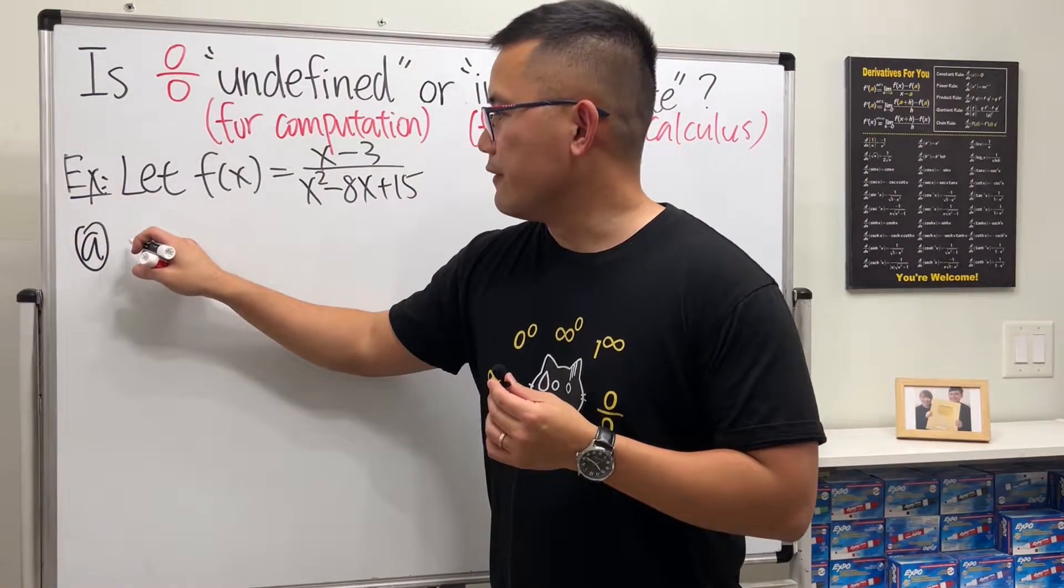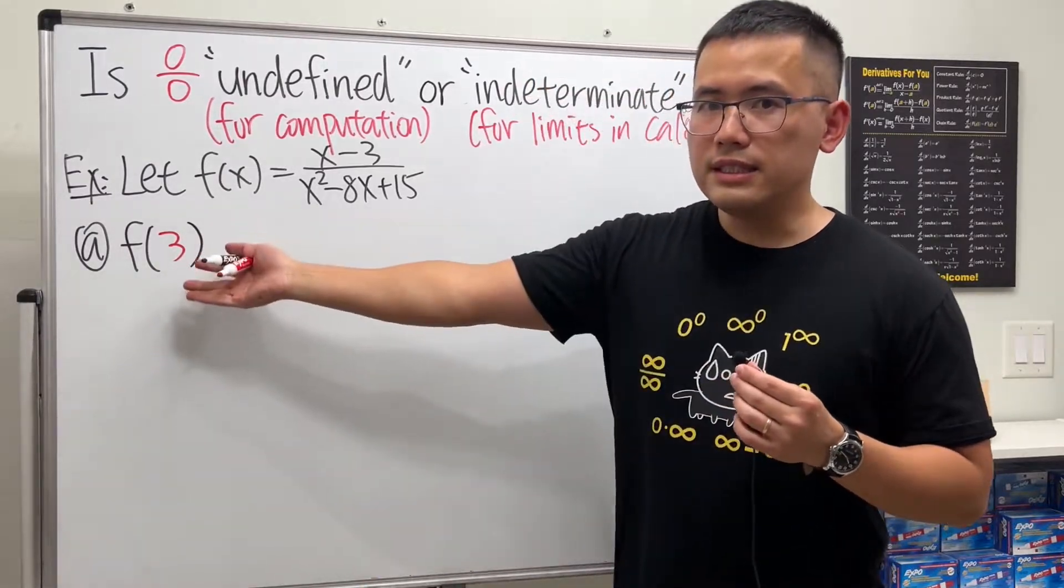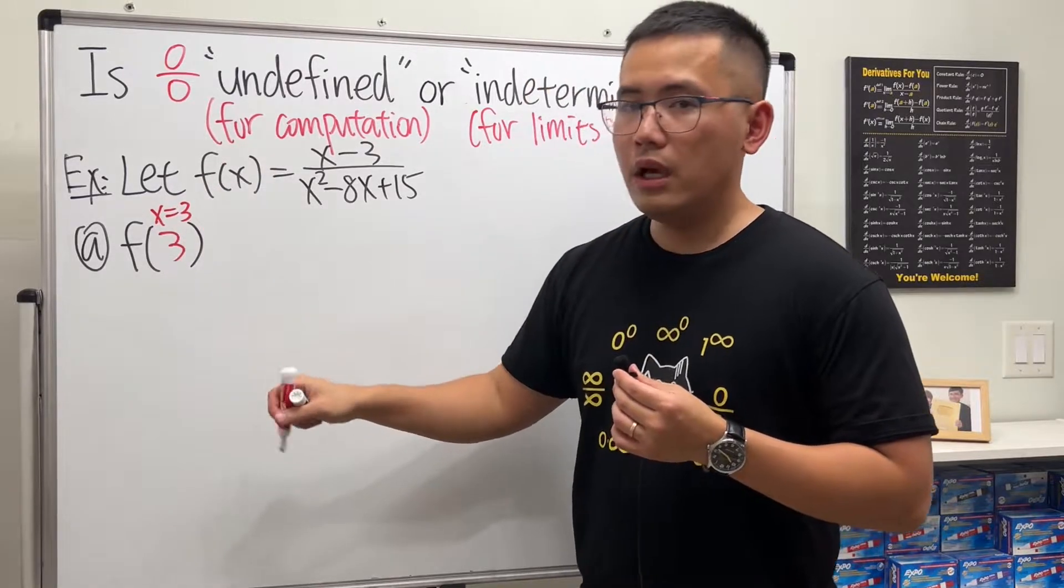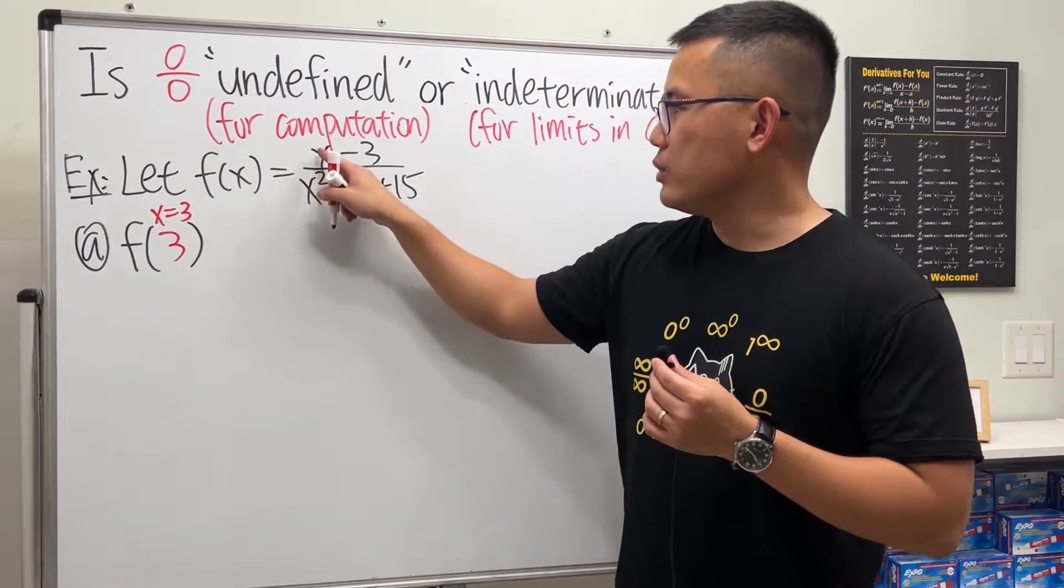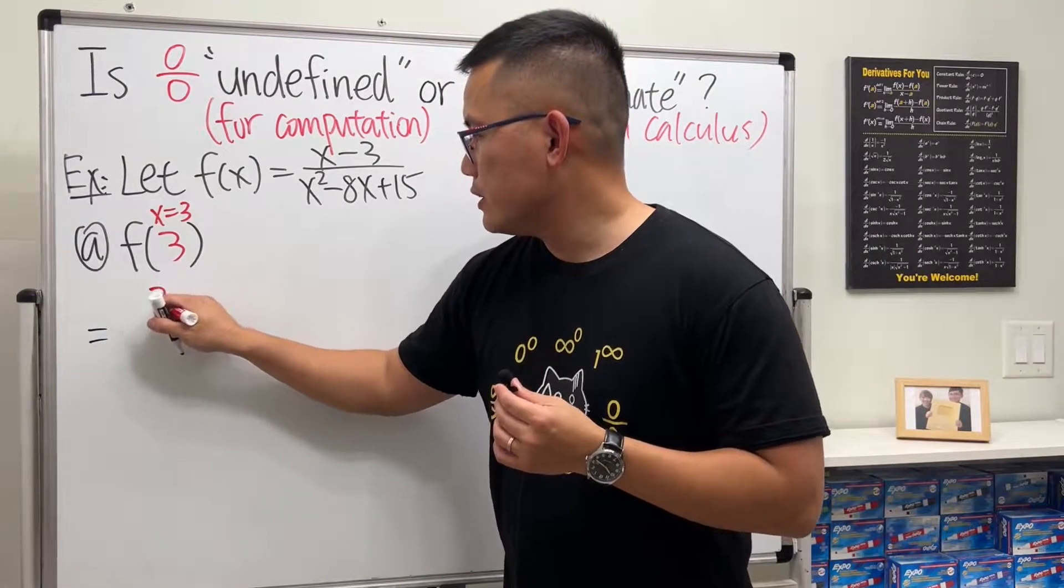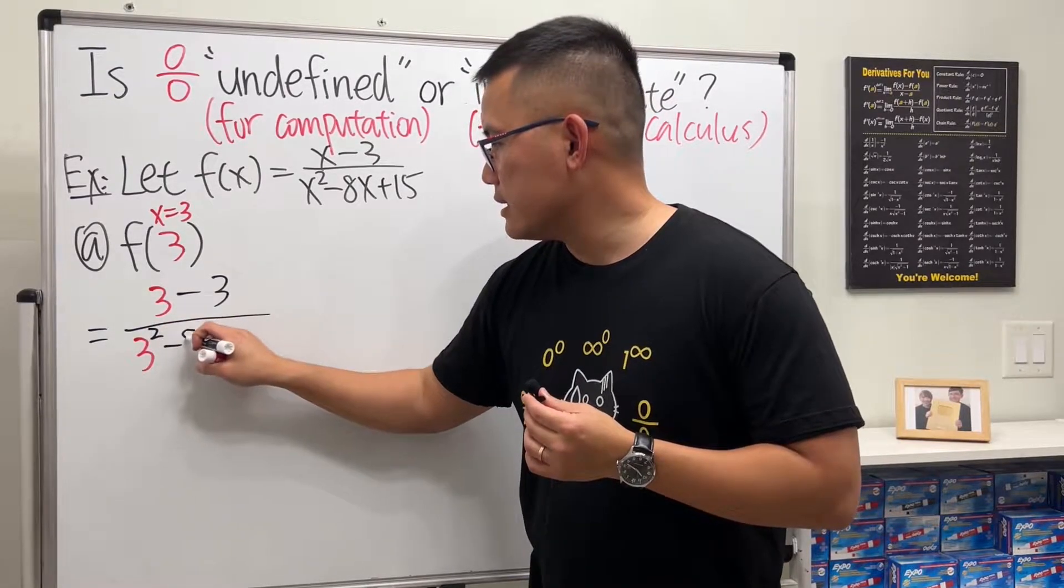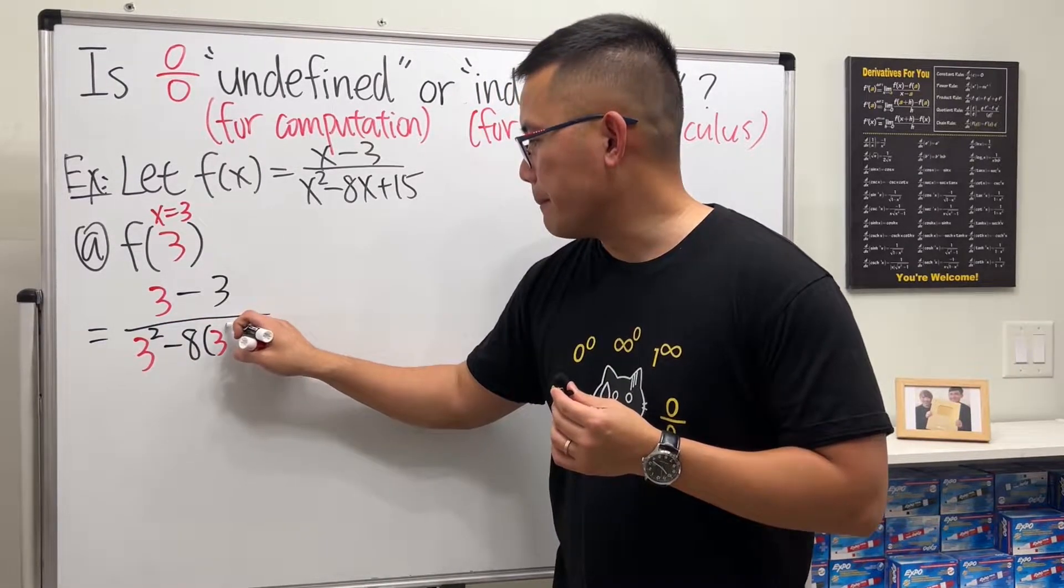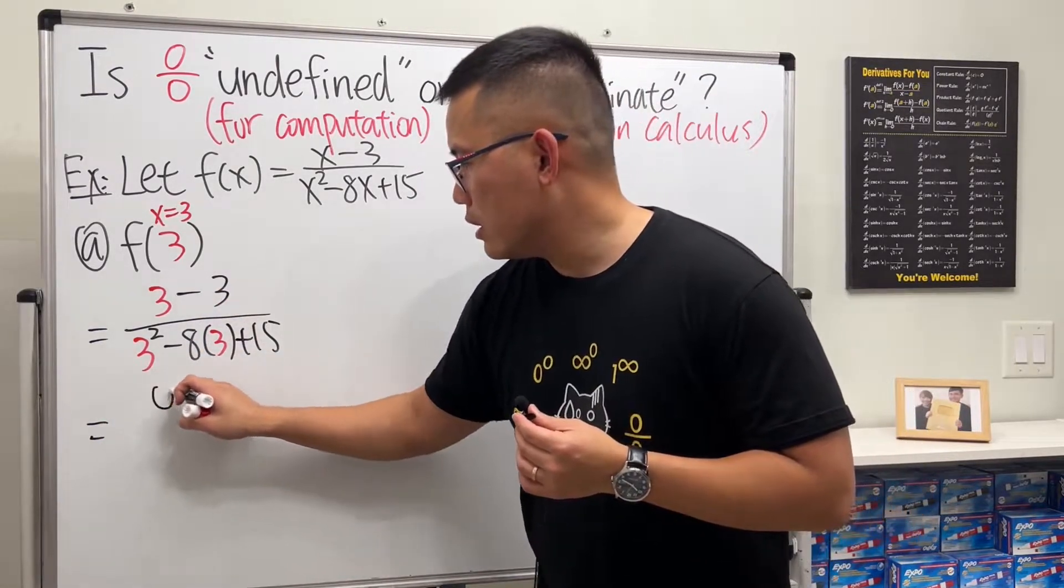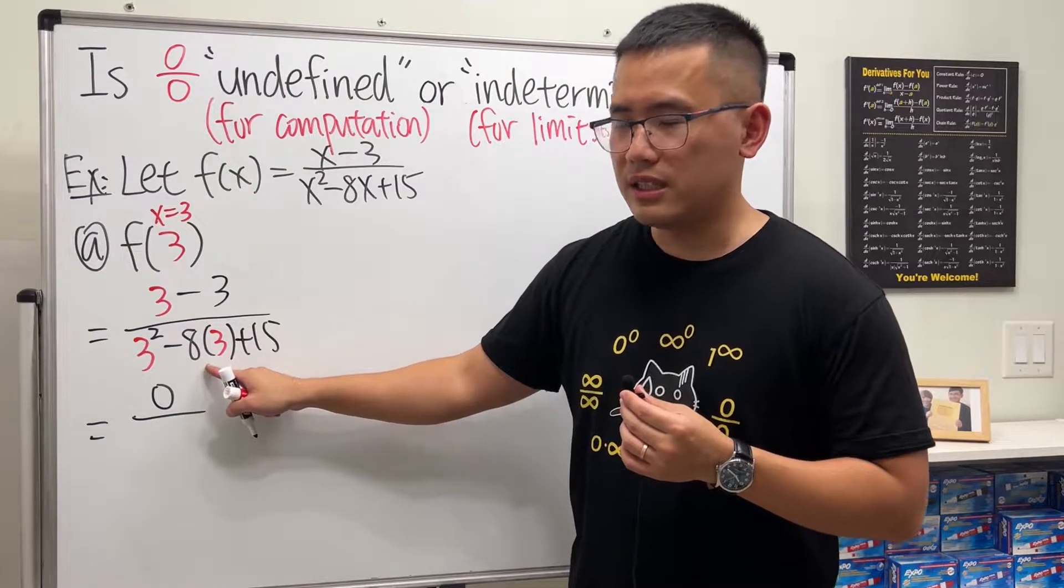Part A, let's go ahead and figure out what's f of three. What does this notation mean? It means that x is exactly equal to 3, and we just have to plug in 3 into all the x's here. So we are going to get 3 minus 3 over 3 squared minus 8 times 3 and then plus 15.